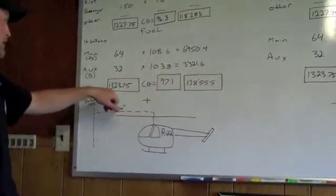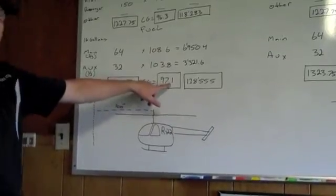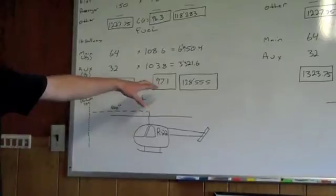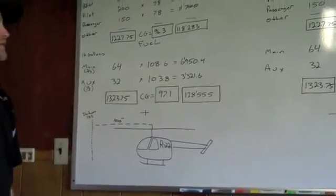Again we take the moment divided by our total weight now to get another CG. These numbers will come into play when we plot them using our POH which we will do in just a moment.